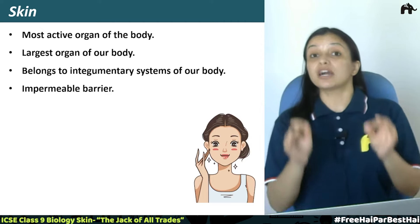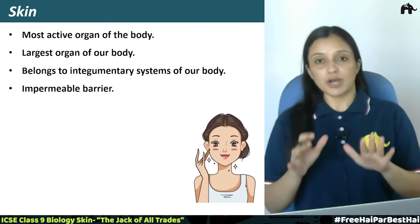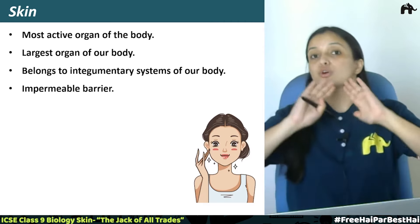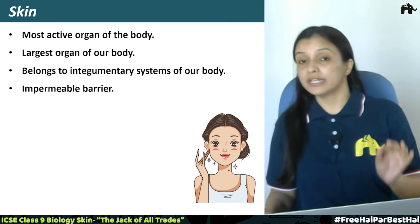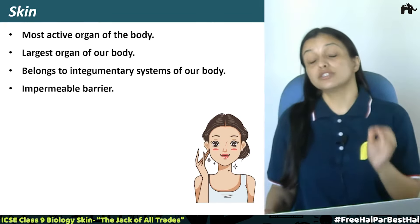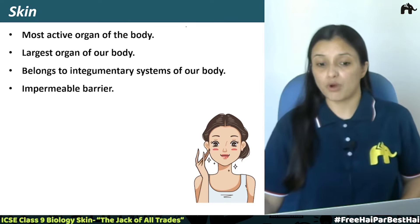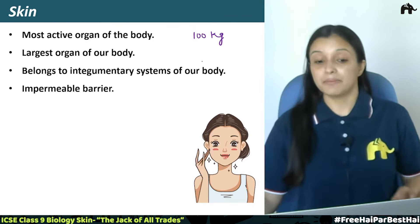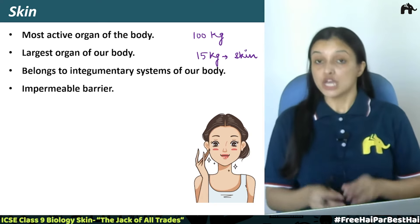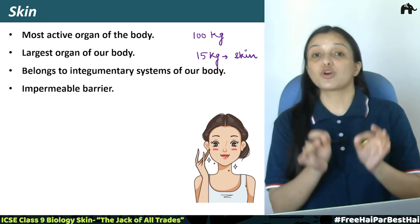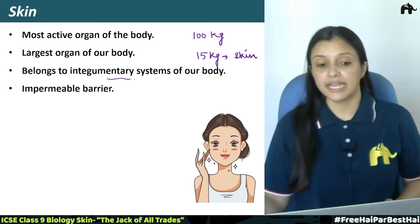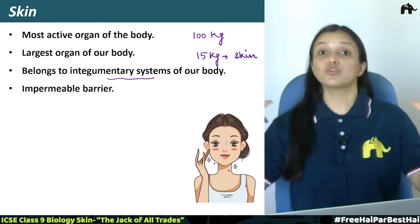Skin is our body's part which covers our whole body. If you look at your hands, your feet, your legs, your back, your face — your outermost covering is our skin. Skin is our body's very active organ and it is the largest organ in our body. If your body weight is 100 kg, then 15 kg of that weight is just your skin — so 15% of adult body weight is due to skin. It belongs to the integumentary system, which means the system that covers our body from outside.